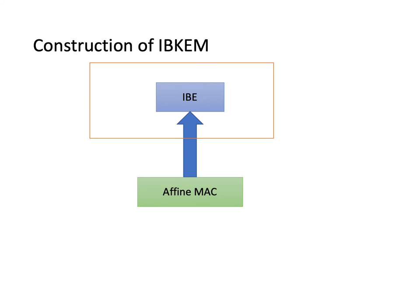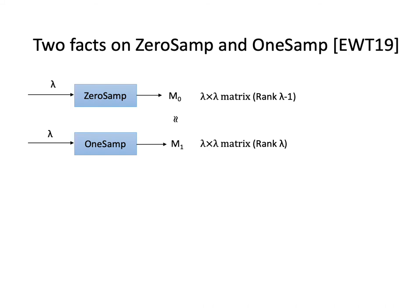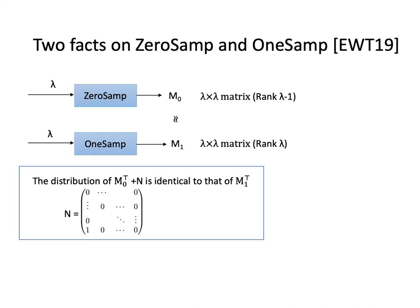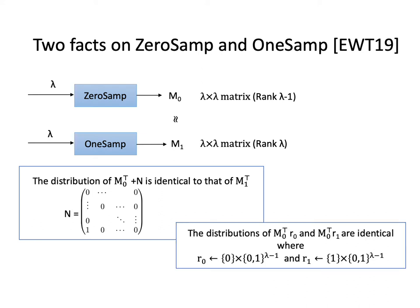Next, I will give the construction of our IBE. Let's recall two facts given by Applebaum and others at first. Let M₀ be a matrix sampled from 0-samp and M₁ be a matrix sampled from 1-samp. The distribution of M₀ᵀ plus N is identical to the distribution of M₁ᵀ. Here, N is a matrix with the bottom left entry being 1 and the other entries being 0. Another fact is that the distributions of M₀ᵀR₀ and M₀ᵀR₁ are identical, where R₀ is a random vector with the first bit fixed as 0 and R₁ is a random vector with the first bit fixed as 1.